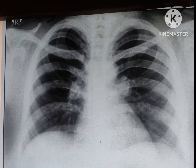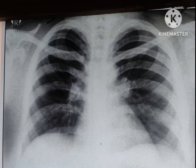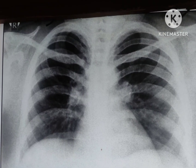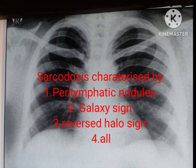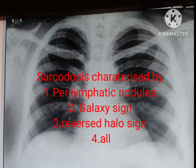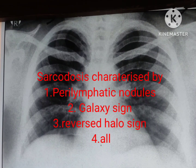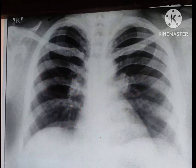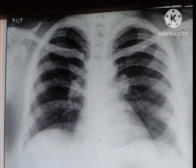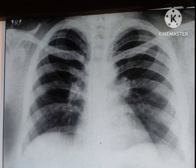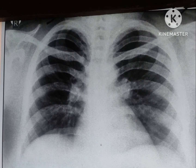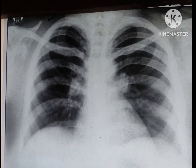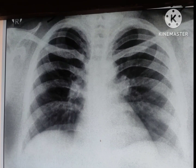Now the question is: what are the other findings in case of sarcoidosis? When you do HRCT you will get the perilymphatic distribution of the nodules, galaxy sign, and the reverse halo sign. All these are seen in case of sarcoidosis. Although the reverse halo sign is very much characteristic of organizing pneumonia.